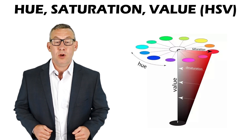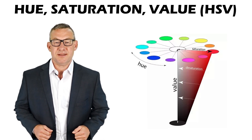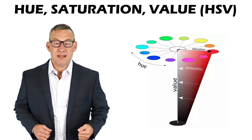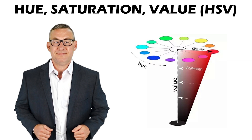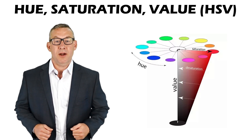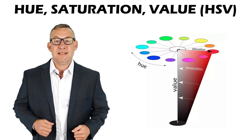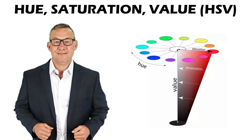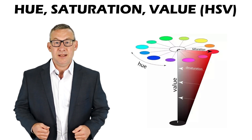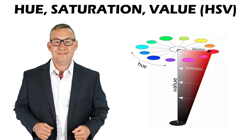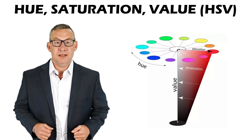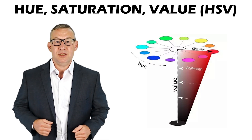The hue, saturation, value, or HSV color system is another additive color system. Hue is the additive color base determined by amounts of primary colors. Saturation is the intensity of color — less intensity creates a lighter, whiter color. Value is the dimension of lightness or darkness — lower value creates a darker color.